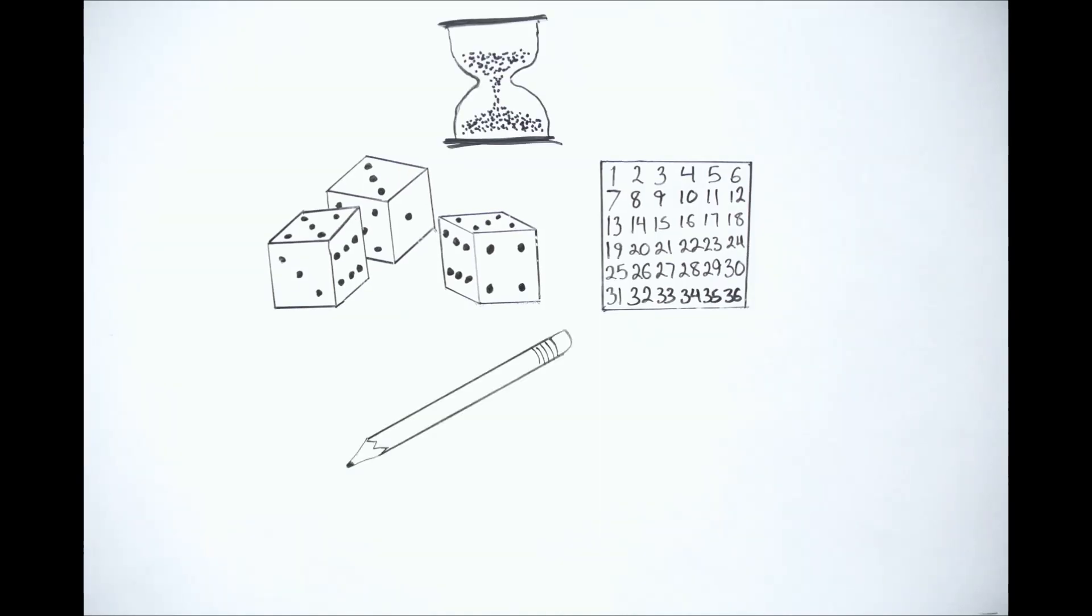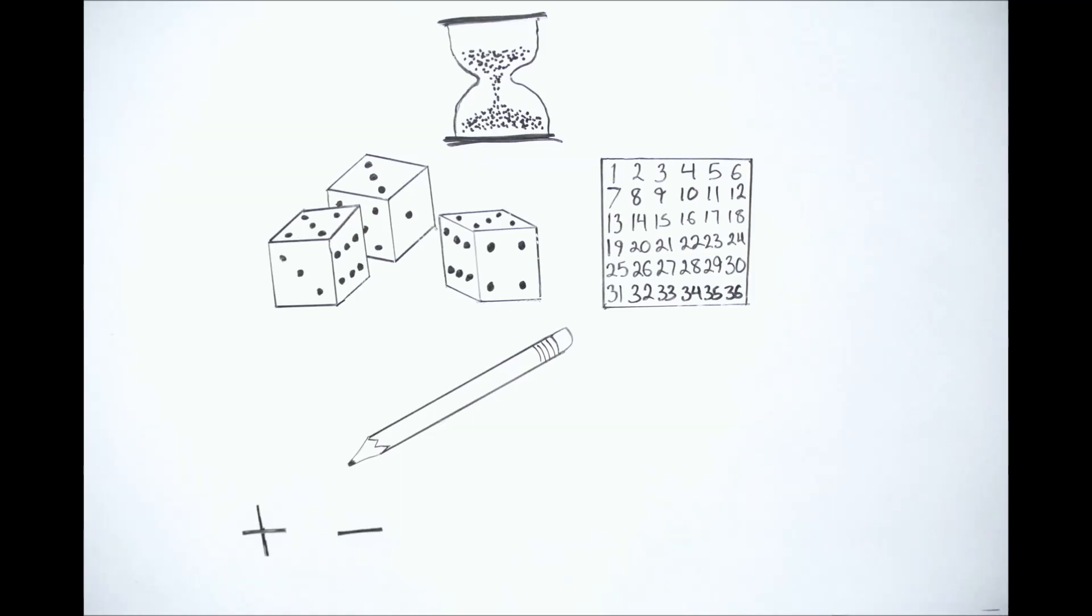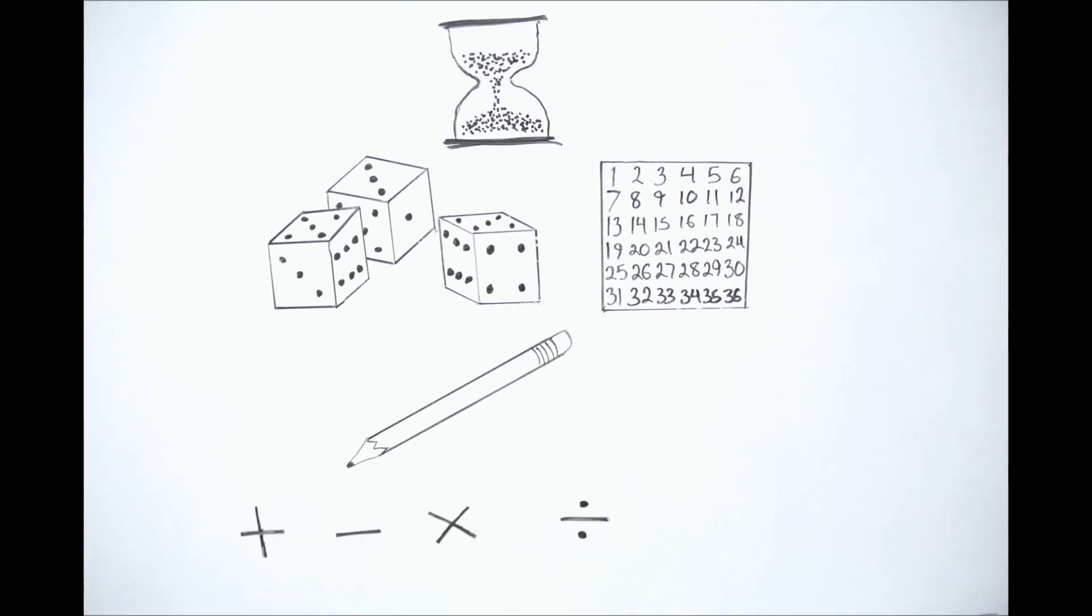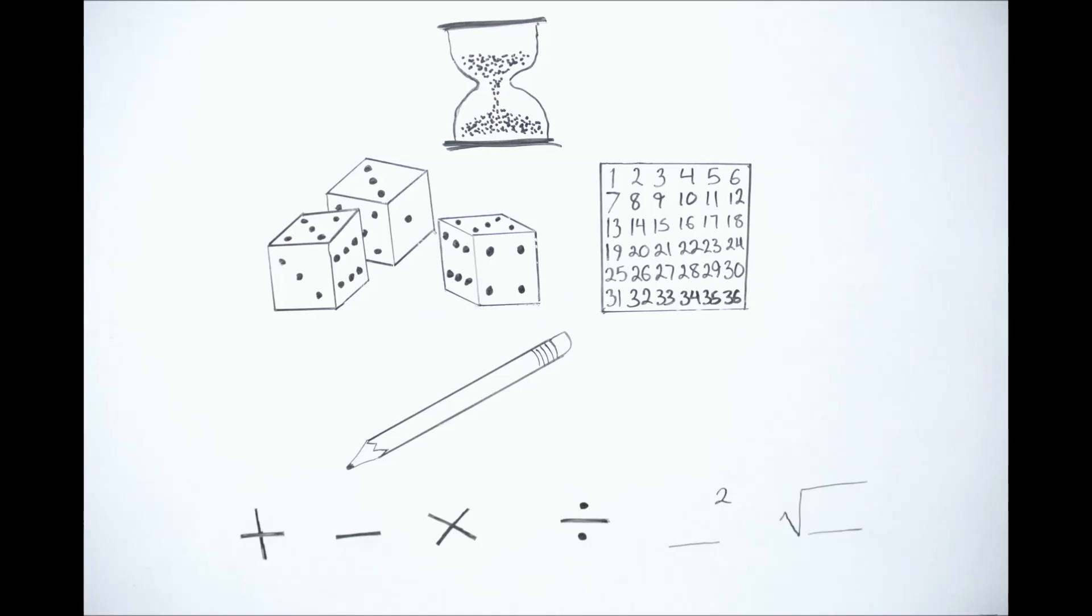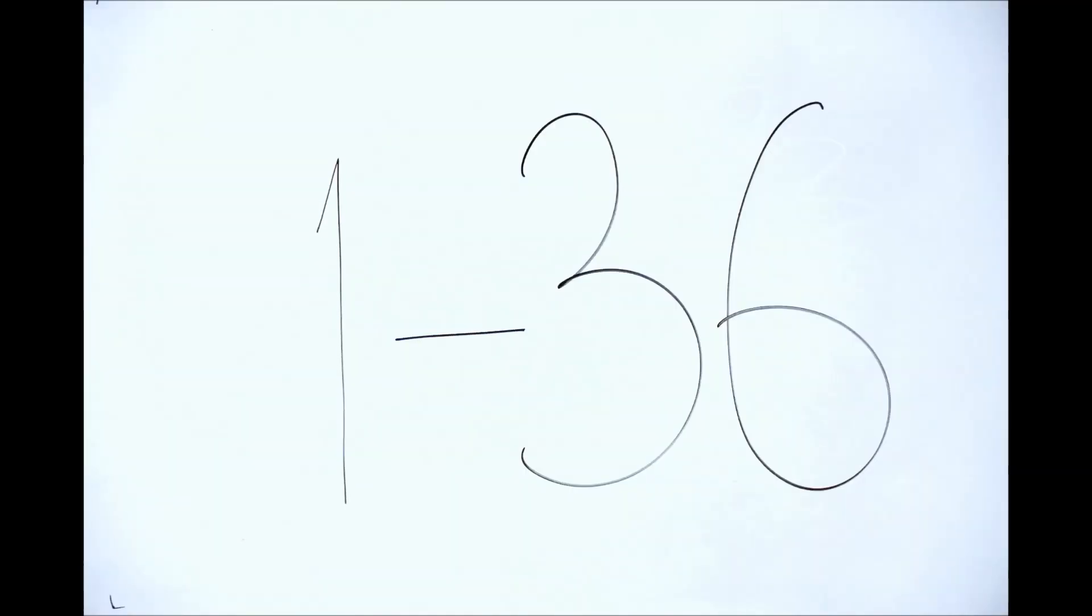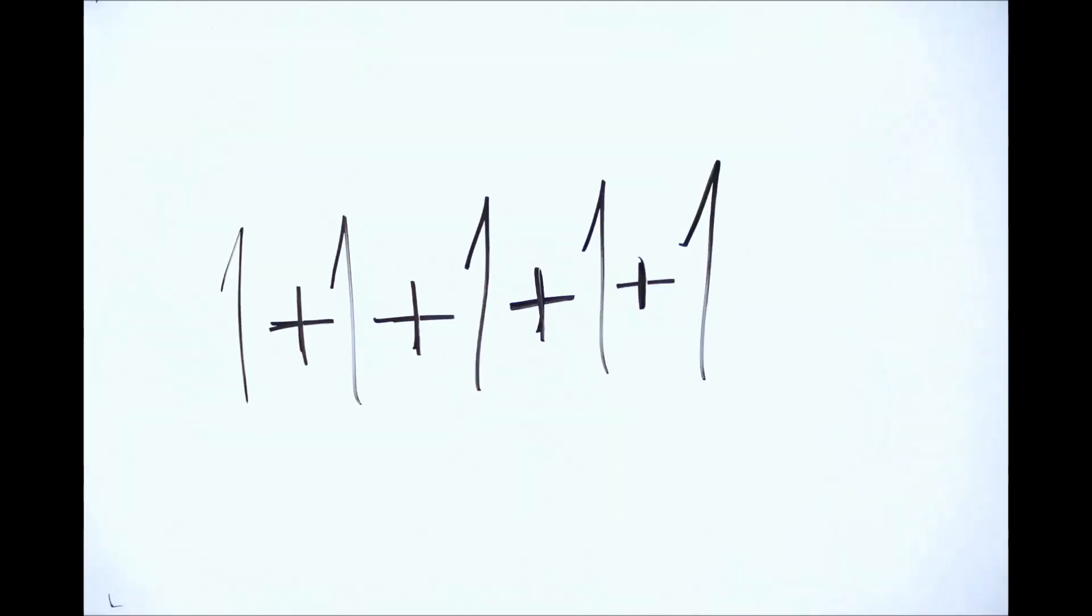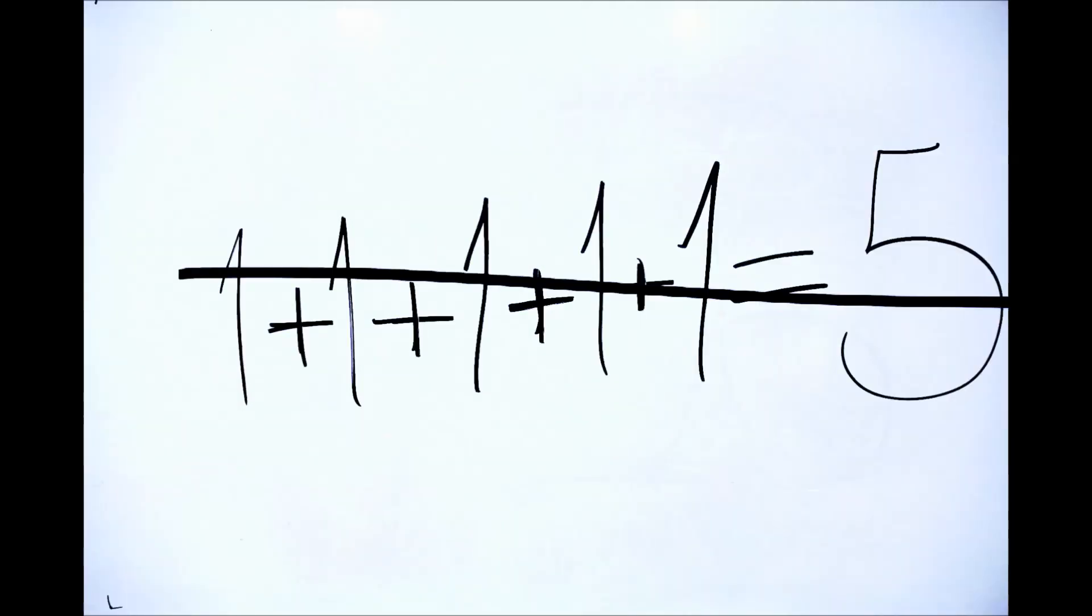The student must combine all three numbers that are rolled, employing addition, subtraction, multiplication, division, exponents, and roots in such a way that the result is a number from 1 to 36. All three numbers must be used once and cannot be used more than once.